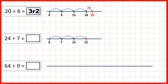So we need to stop at 3 jumps of 7, which takes us to 21. Then from 21, we need to think how many do we need to count on to get to 24. Well, 21 plus 3 is 24, and that means our answer is 3 remainder 3. That's because we made 3 jumps of 7, but that only took us to 21, and from 21 we needed another 3 to get to 24.